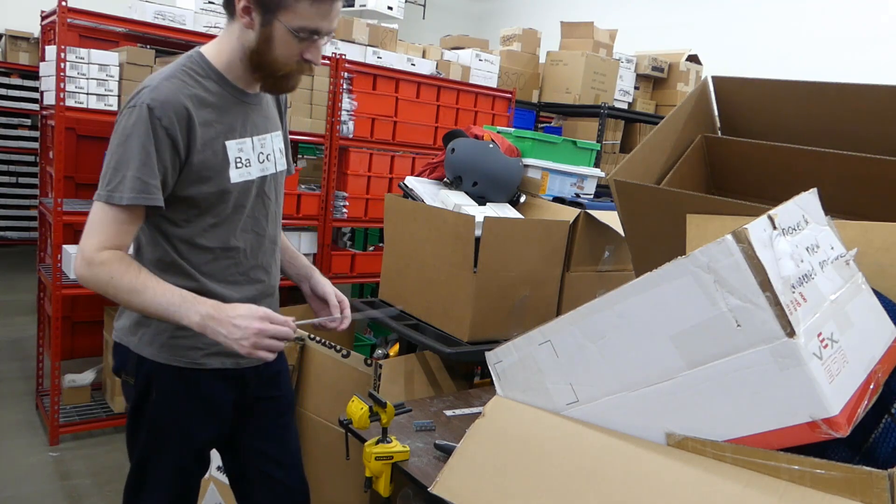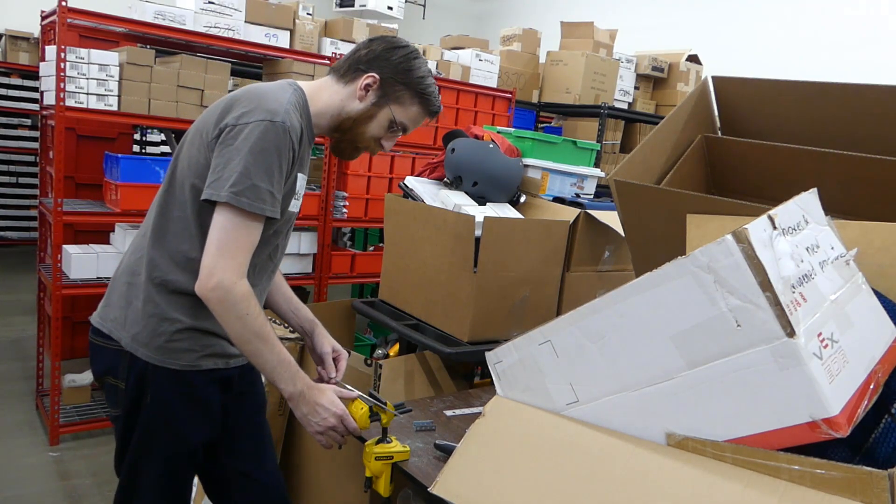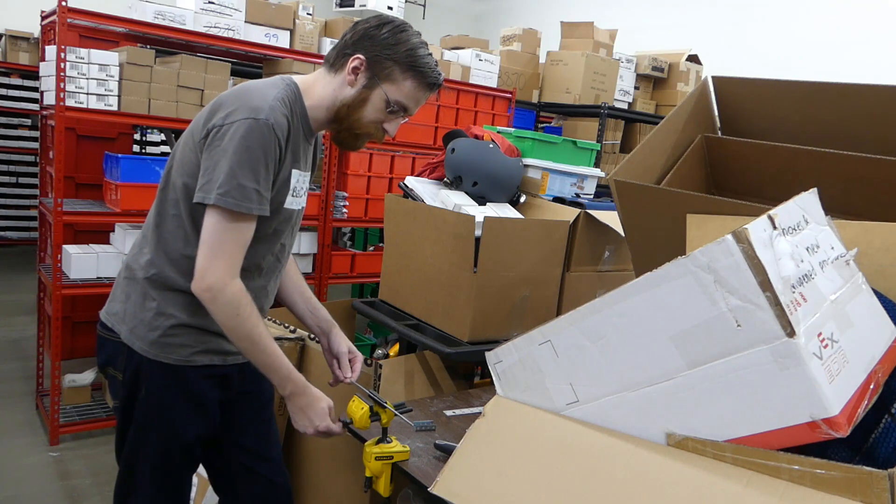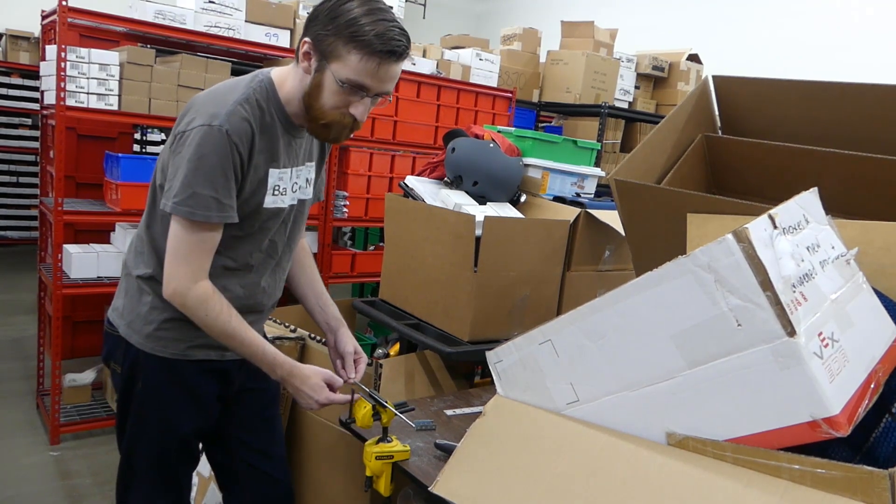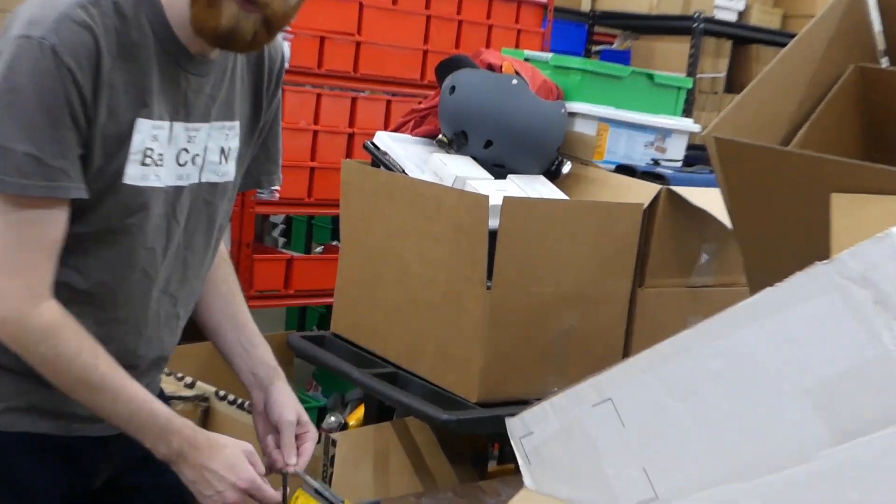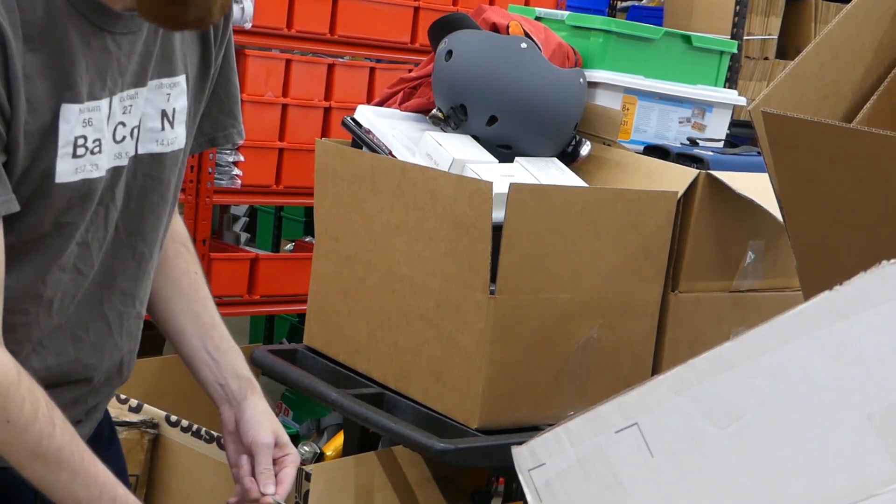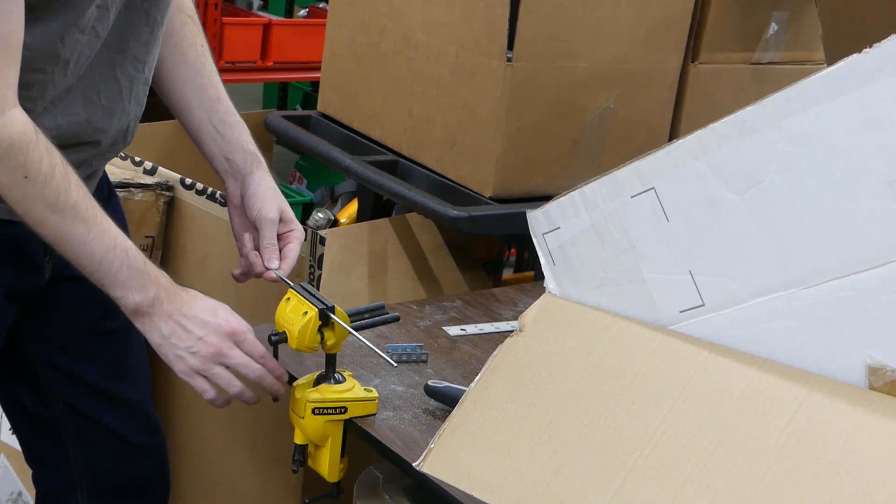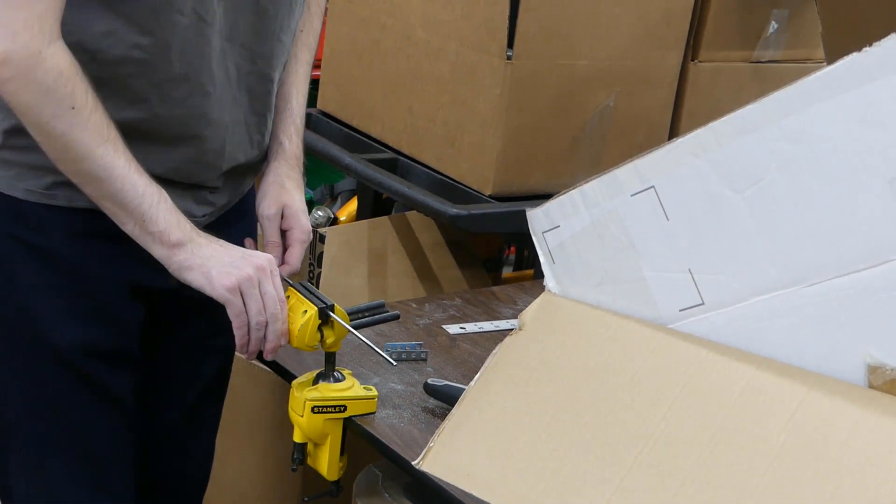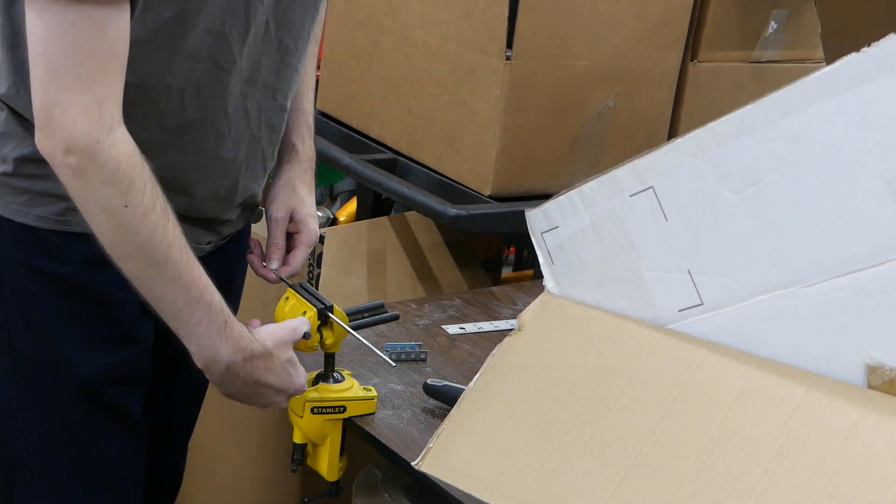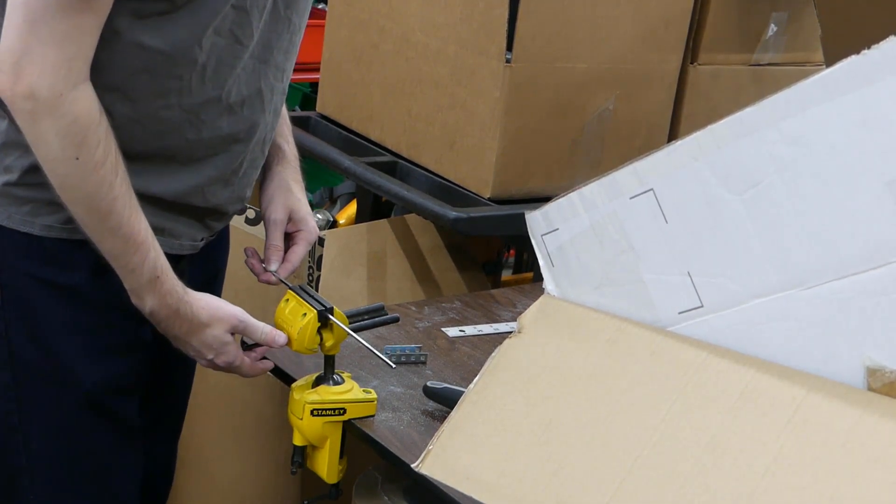So all you do is take your shaft here. Now you get a nice vise, preferably clamped to something a little more sturdy than a folding table, but this is what we got. This is where nobody minds if we make a mess. This does make a mess. It leaves metal dust everywhere. You'll also notice I have taken this off the robot because I do not want this metal dust anywhere near that robot.